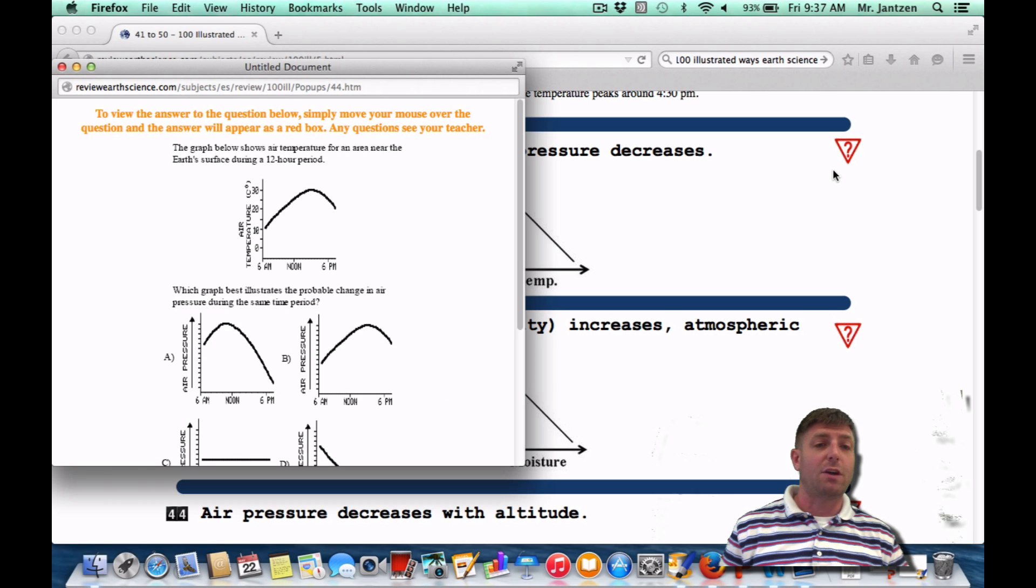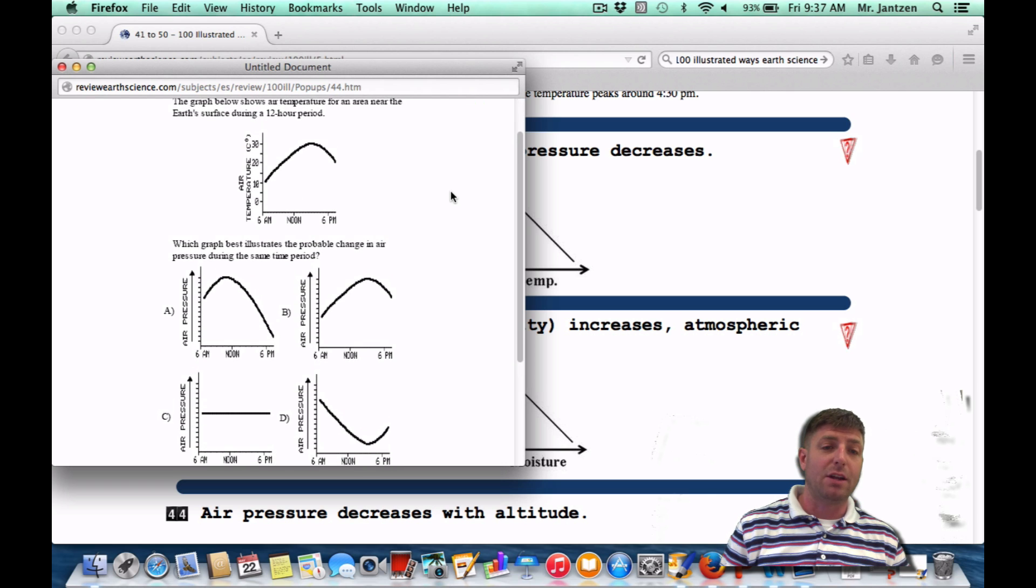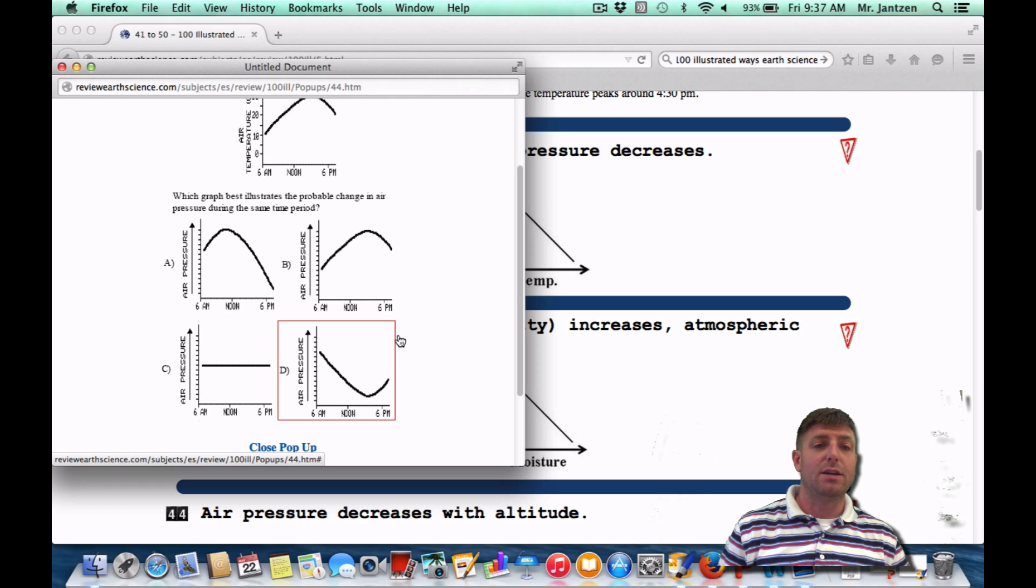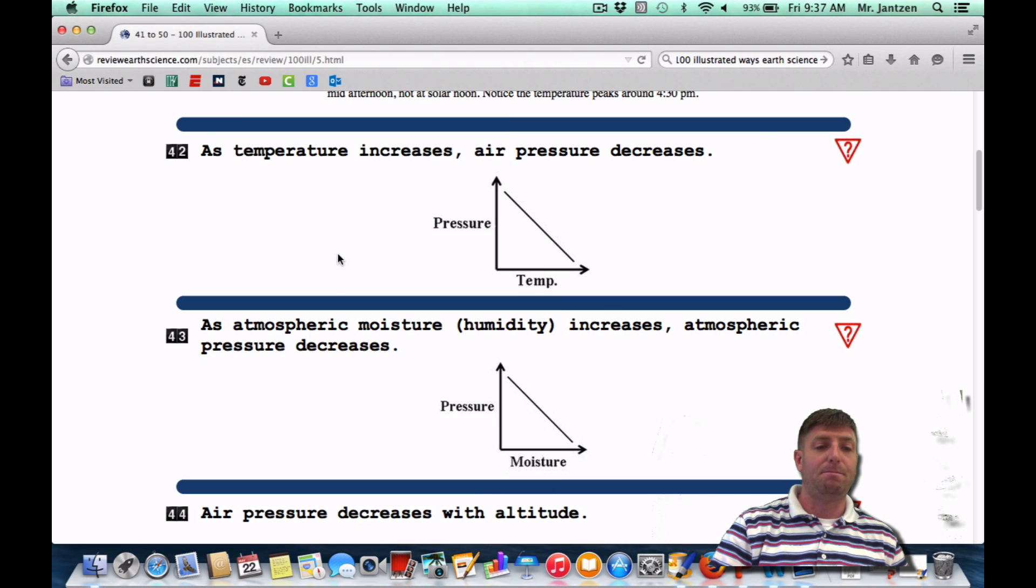If you see it as a Regents question, the graph below shows the air temperature for an area near Earth's surface during a 12-hour period. Which graph best illustrates a probable change in air pressure during the same period? You have kind of an increase and then a drop-off. And you're going to look for the inverse of that. The inverse of that is going to be choice D, because it's going down and then back up again. As temperature goes up, your pressure is going to go down.